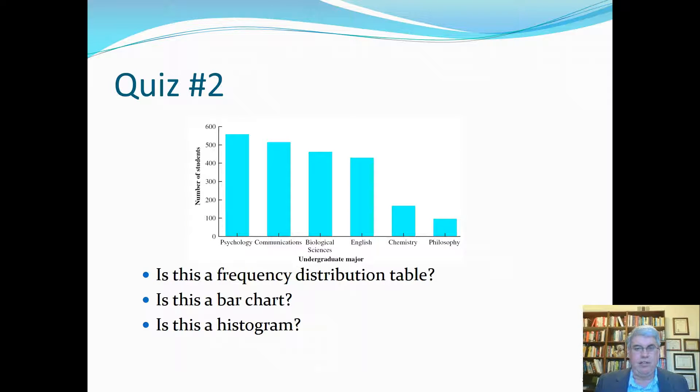Now, is it a bar chart? Yes, it is a bar chart. There are bars, and there are gaps between the bars because these are nominal categories. They talk about the different majors. There's no specific order for them. And is this a histogram? No, this is not a histogram. In a histogram, there are no gaps between the distribution, and there's an order typically going from the smallest to the largest, going left to right, indicating what the different bars represent. So it's a bar chart, but not a frequency distribution table or a histogram.